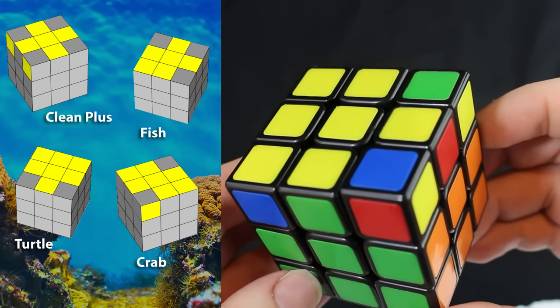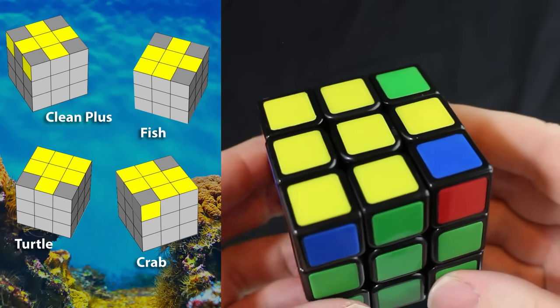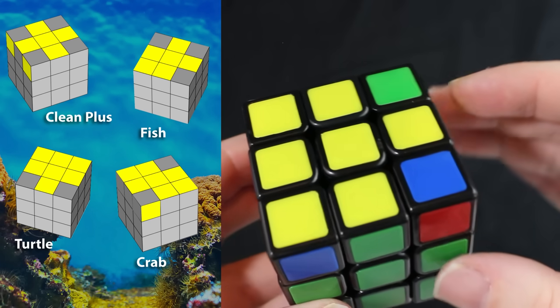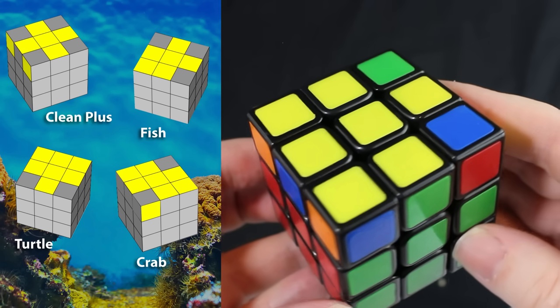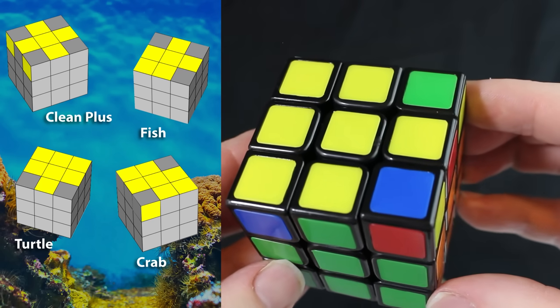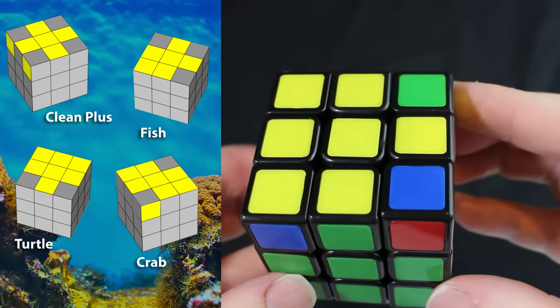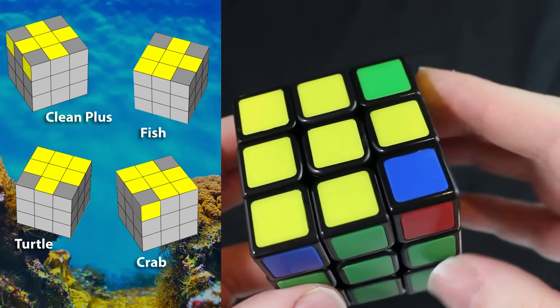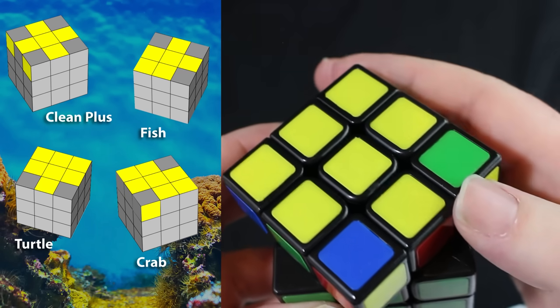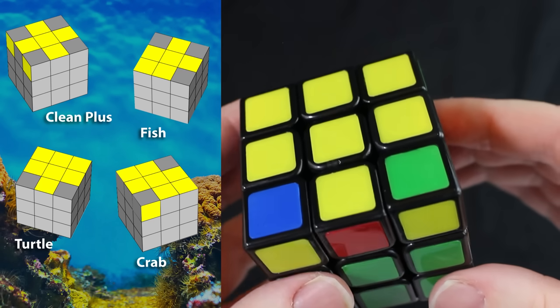Once again, I'm going to show an example of how to solve the yellow side. We have our yellow plus from our previous step, and now we want to finish solving this. So what do we do? Do we see a pattern over there in the chart? Yes, this one looks like the turtle. And what do we do? We make sure the turtle is facing us. I'm going to turn the top so now the turtle is facing us. And then we do those moves.